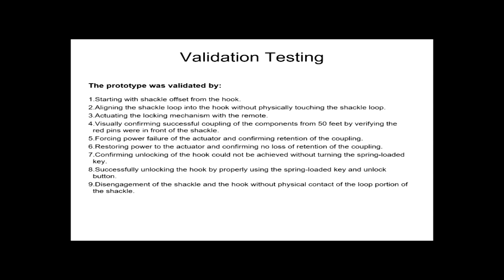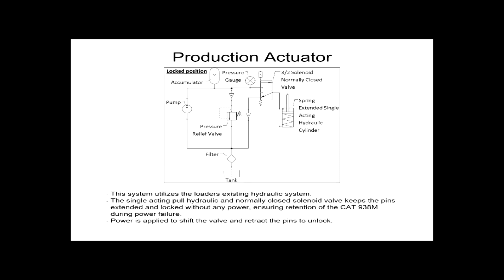For full-scale production, our design ties into the existing system on the front-end loader, utilizing a three-way, two-position solenoid valve with a spring-extended, single-acting hydraulic cylinder. This will ensure that the system will remain in the locked position if any failure occurs.